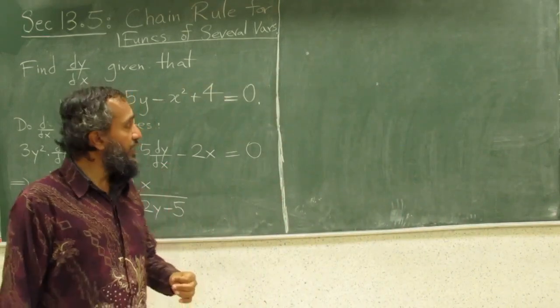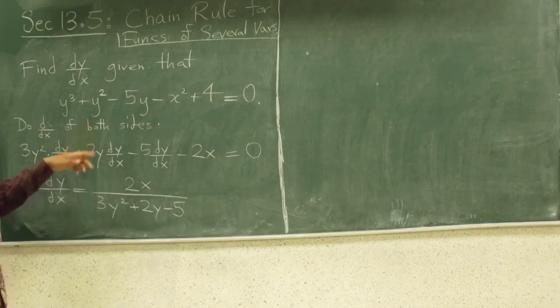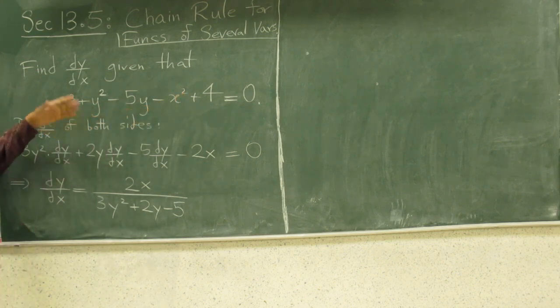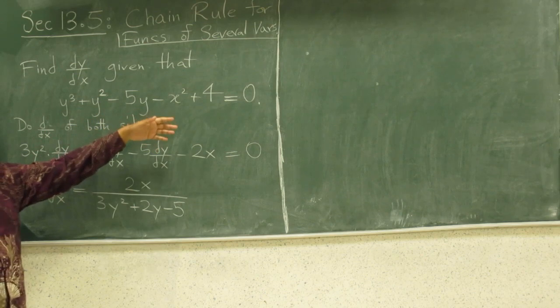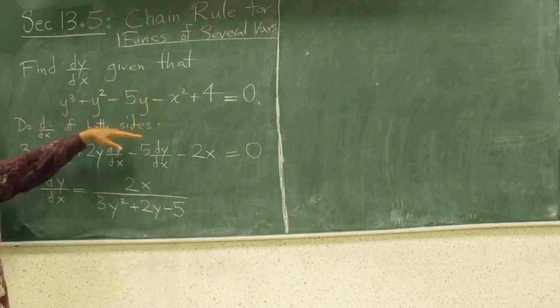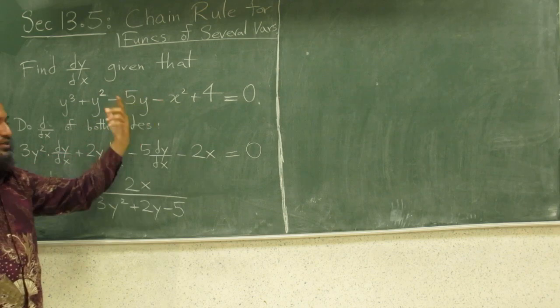Okay, now let's see how chain rule can help us do implicit differentiation. I've written here a problem from calc 1. You've been given a relationship between y's and x's, this makes some curve, just like your equation x squared plus y squared equals 16 is a circle radius 4. This is some complicated curve. And you've been asked to find the slope of that curve as a formula and at a specific point and you can plug in the points.